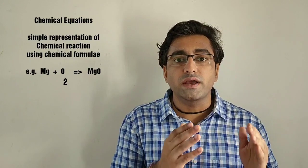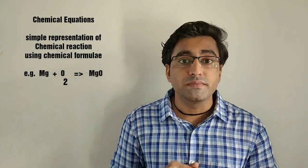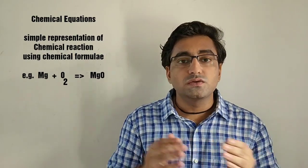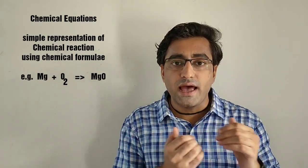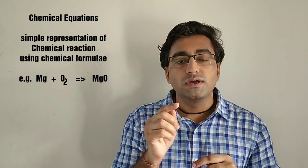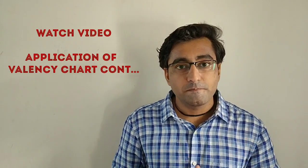A chemical equation is the simple representation of a chemical reaction using chemical formulae. So this same word equation can be written as Mg + O₂ → MgO. MgO is magnesium oxide. The valency of Mg is 2 and the valency of oxide is 2; by crisscrossing we get magnesium oxide. These are the two ways in which a chemical reaction can be represented: word equation and chemical equation.